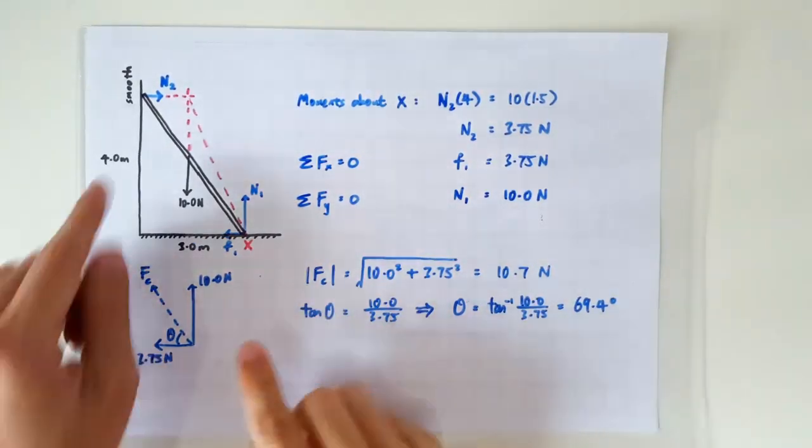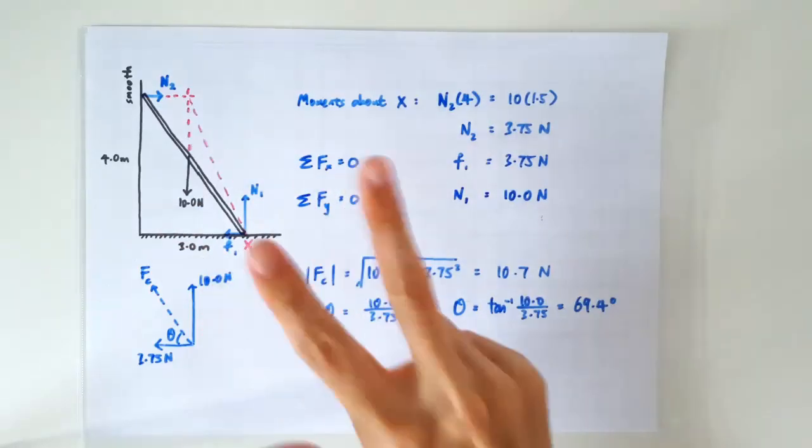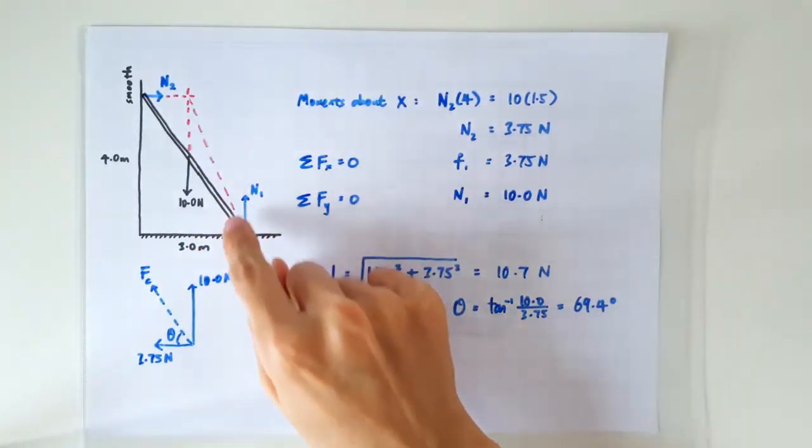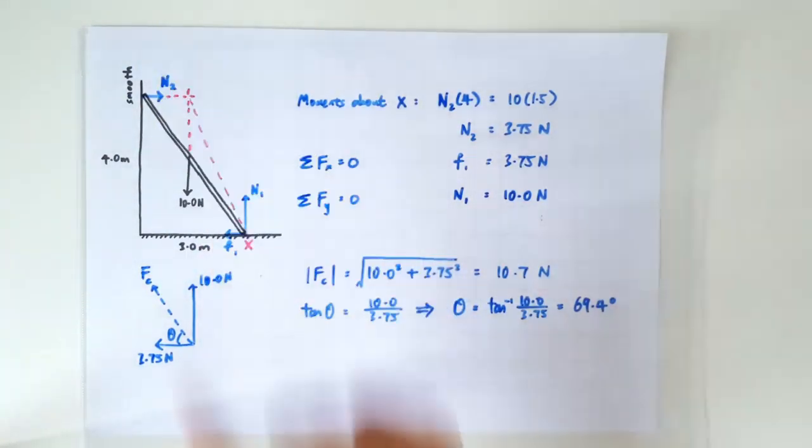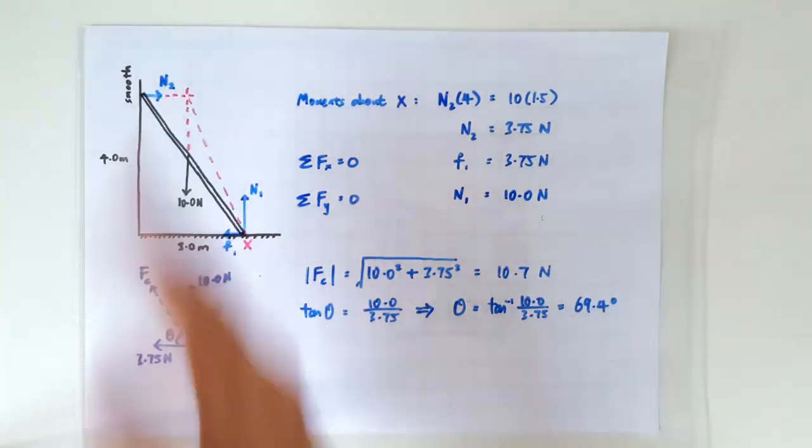By the way, since the ladder is experiencing just three forces, N2, the weight and the contact force, actually we know that these three forces, their lines of action should intersect at the same point. So 69.4 degrees looks about right.